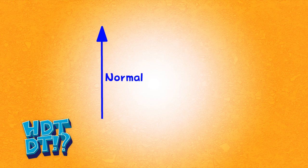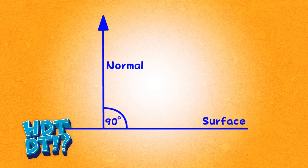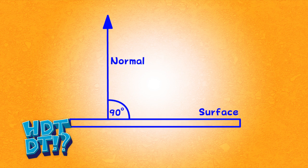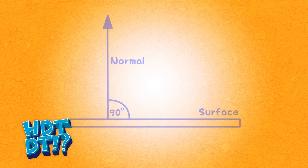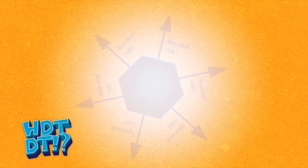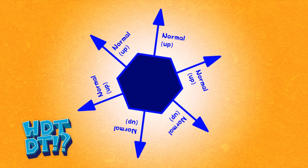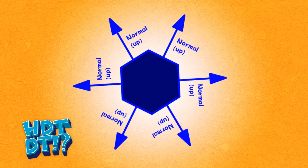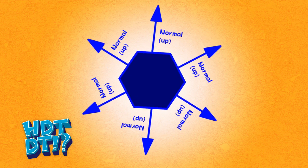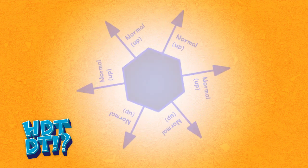Well, first we need to cover surface normals. Think of a normal as a line that is perpendicular to its surface, so it always points up from whichever polygon it belongs to. This allows the game engine to calculate what is up from any given surface. But how exactly does that help us?